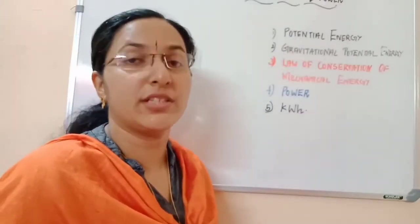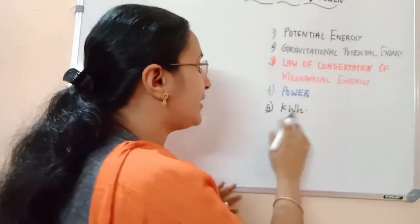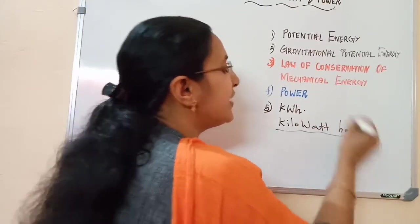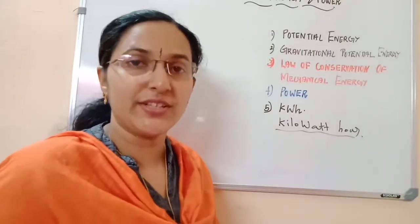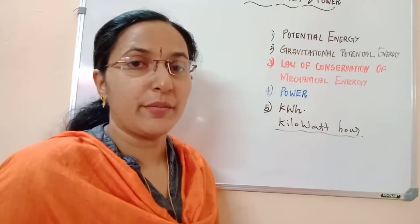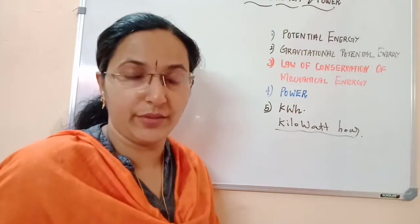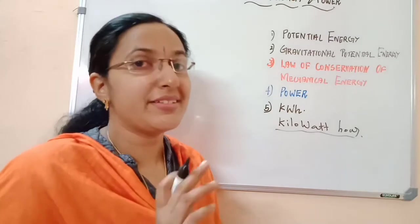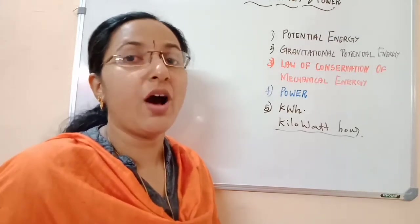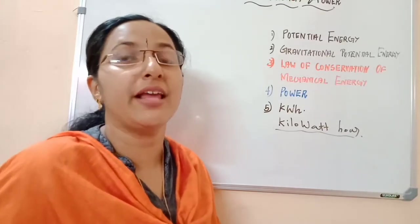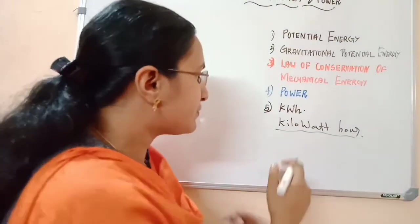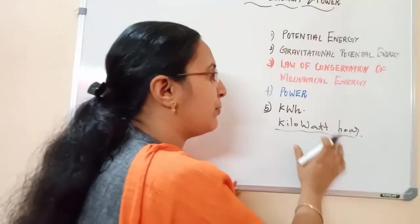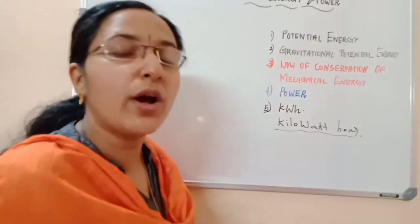Next we can study about the kilowatt hour. The kilowatt hour — kWh — is the commercial unit of electrical energy. You know that an electrical bill comes to our home; the electrical energy consumed by us is measured not in joules but in kilowatt hours. Watt is a unit of power; kilowatt means 1000 watt. 1000 watt of power consumed by an appliance in 1 hour is known as 1 kilowatt hour.